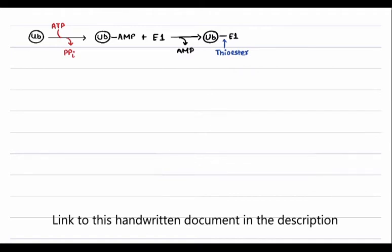Next, the E1 takes the ubiquitin and puts it onto the E2, and the E1 falls off. So now the ubiquitin is on the E2 protein, and the E2 bound to the ubiquitin comes to the E3 complex.